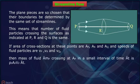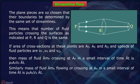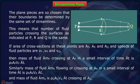Then mass of fluid ΔM_P crossing at A_P in a small interval of time Δt is ρ_P A_P V_P Δt. Similarly mass of fluid ΔM_R flowing at A_R in a small interval of time Δt is ρ_R A_R V_R Δt and mass of fluid ΔM_Q is ρ_Q A_Q V_Q Δt crossing at A_Q.